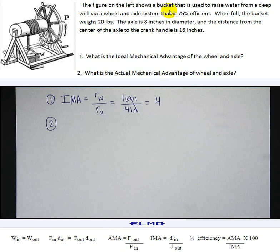That's where knowing that the system is 75% efficient is really important for us because now I can use the percent efficiency formula to do AMA divided by IMA times 100 because we just found IMA and I know the efficiency.